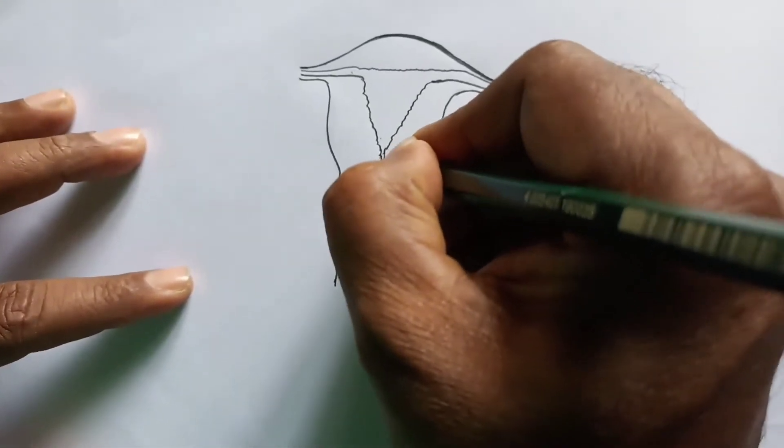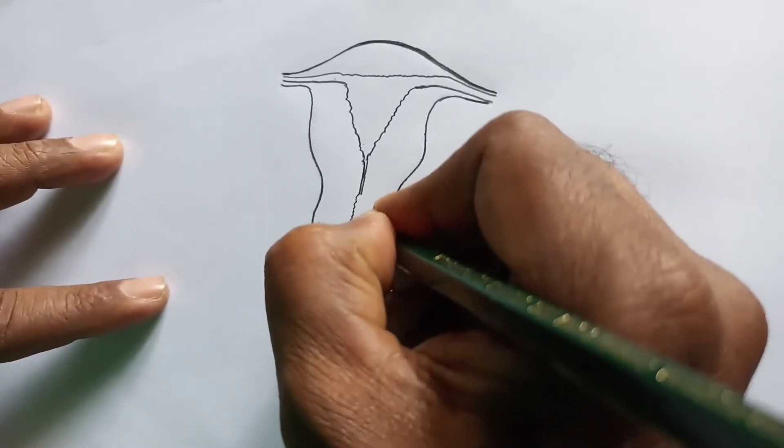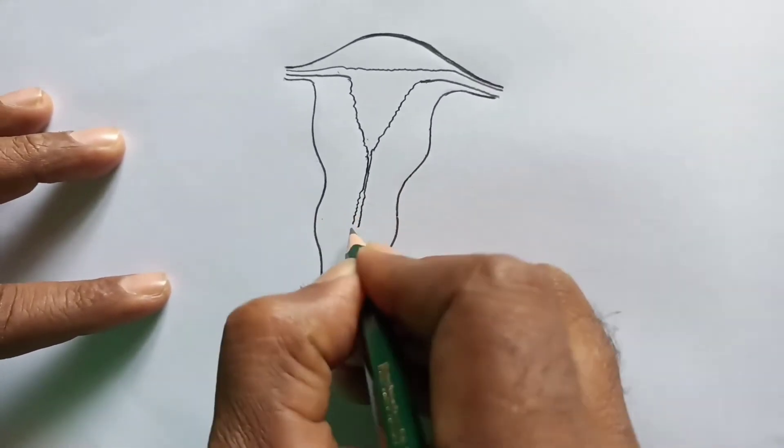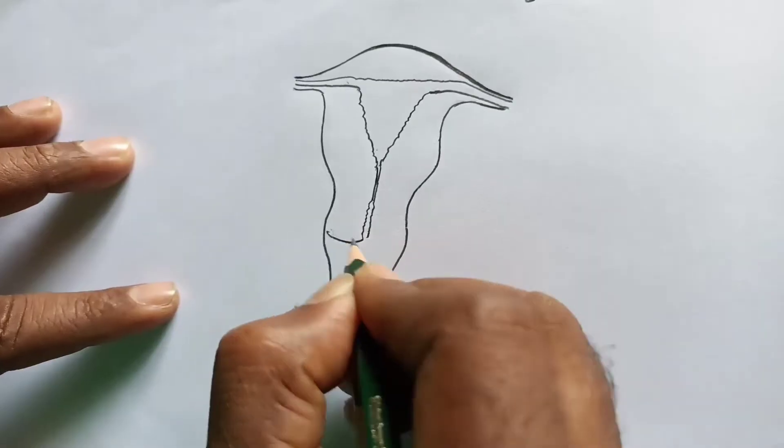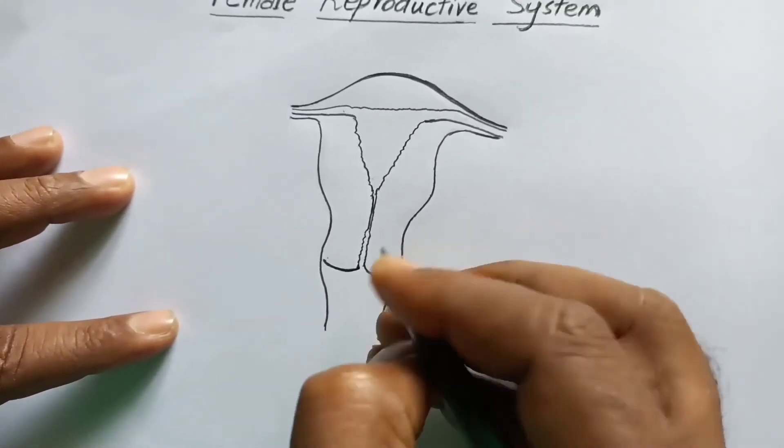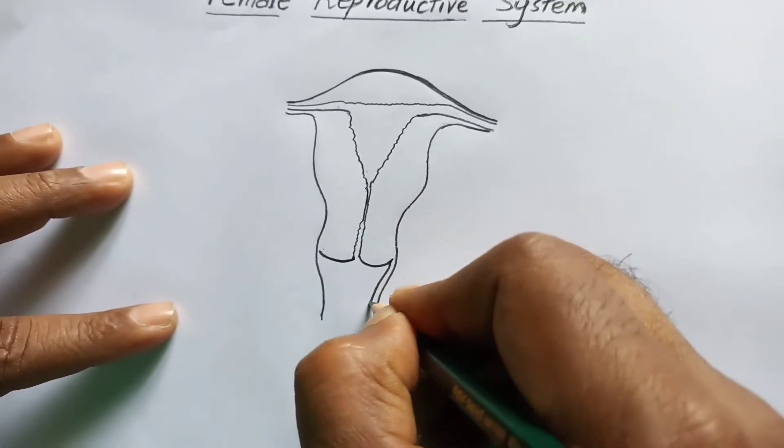Now, this is the cervix. You draw like this. This is the vaginal chamber, the vagina.